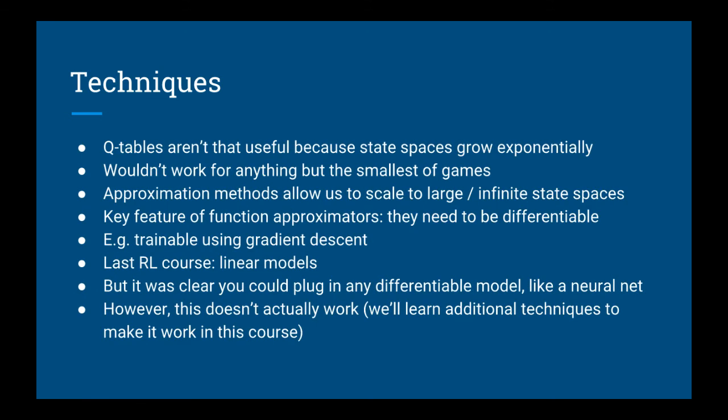Then we saw that Q-tables aren't that useful, because state spaces generally grow exponentially, and so we wouldn't be able to use them for anything but the smallest of games. We then looked at approximation methods, which allow us to scale to large and possibly infinite state spaces. One key feature of the function approximators we use for reinforcement learning is that they are differentiable — in other words, we can train them using gradient descent. In my first reinforcement learning course, we stuck to linear models, but I stated that you could plug and play any kind of differentiable model, like a neural network.